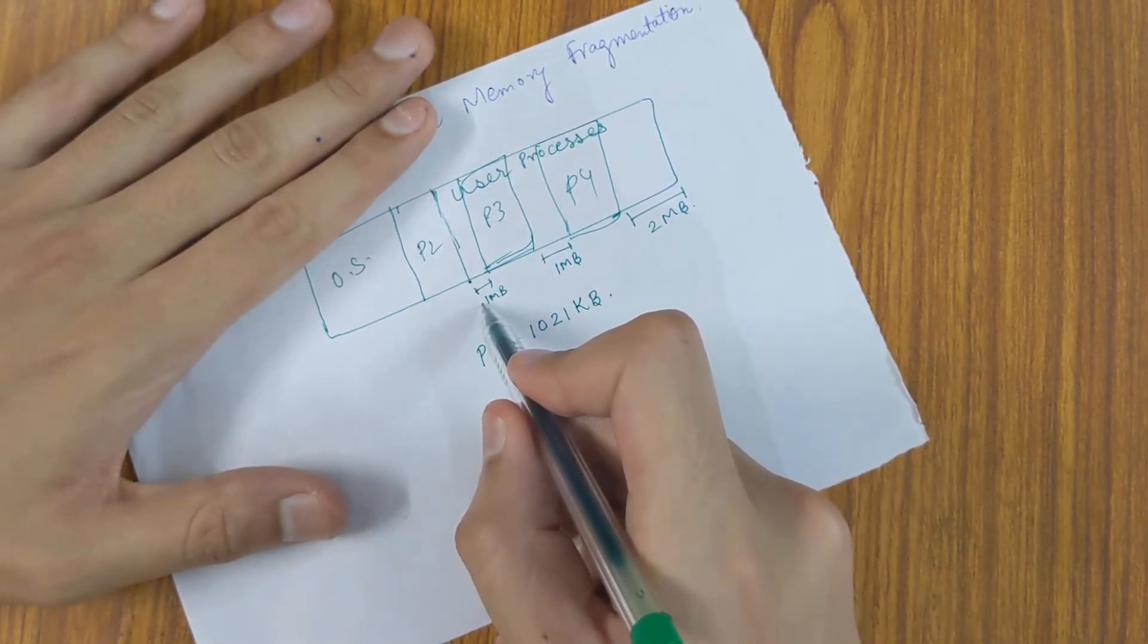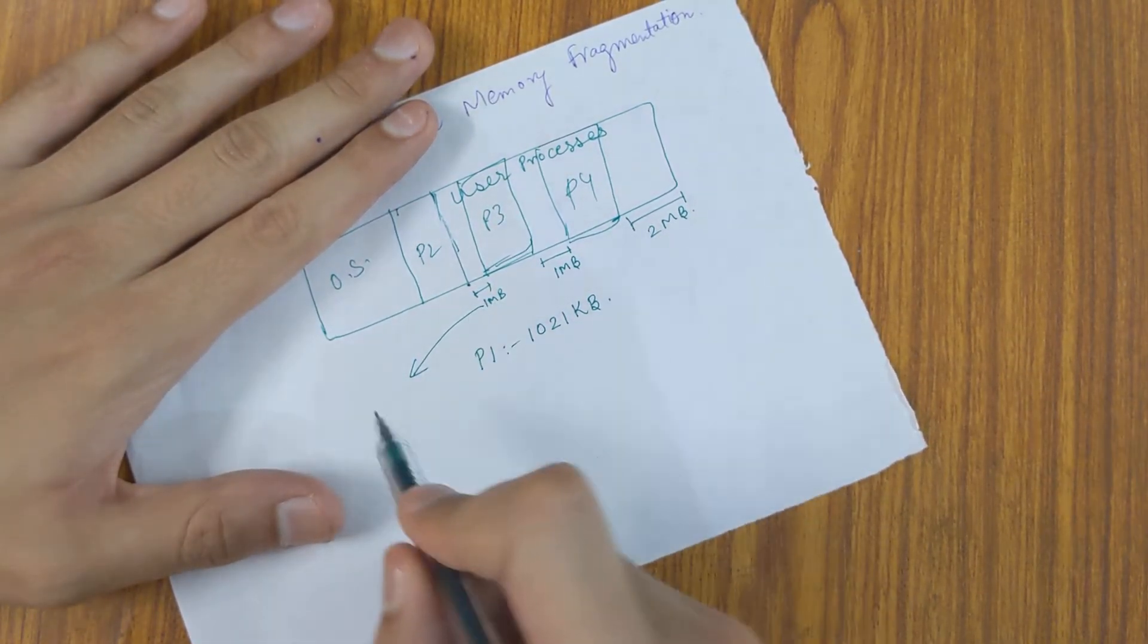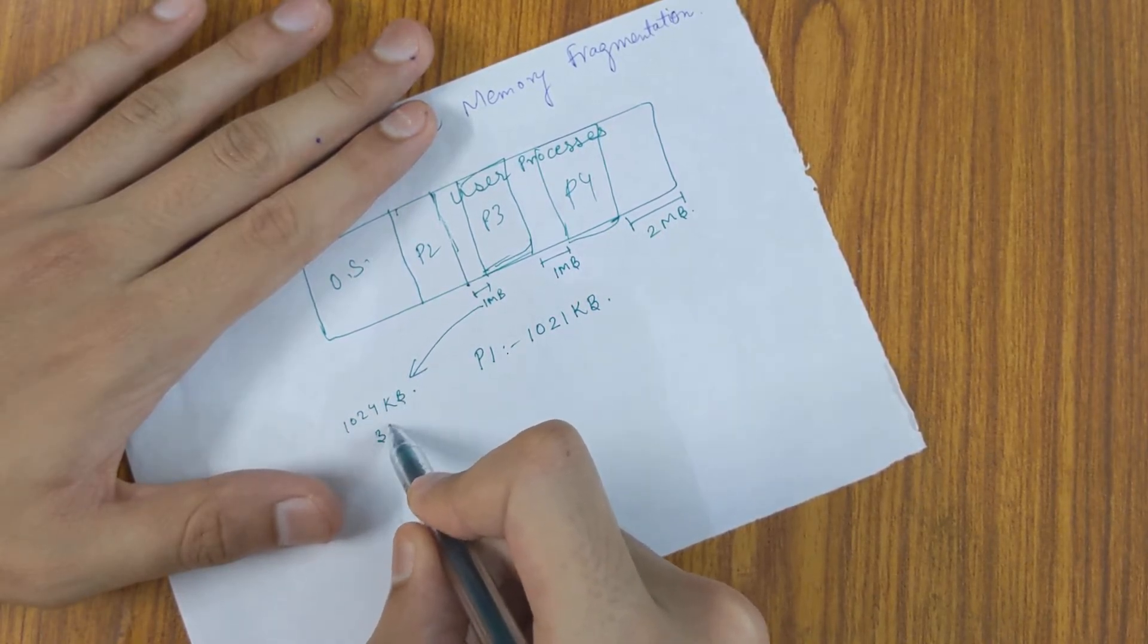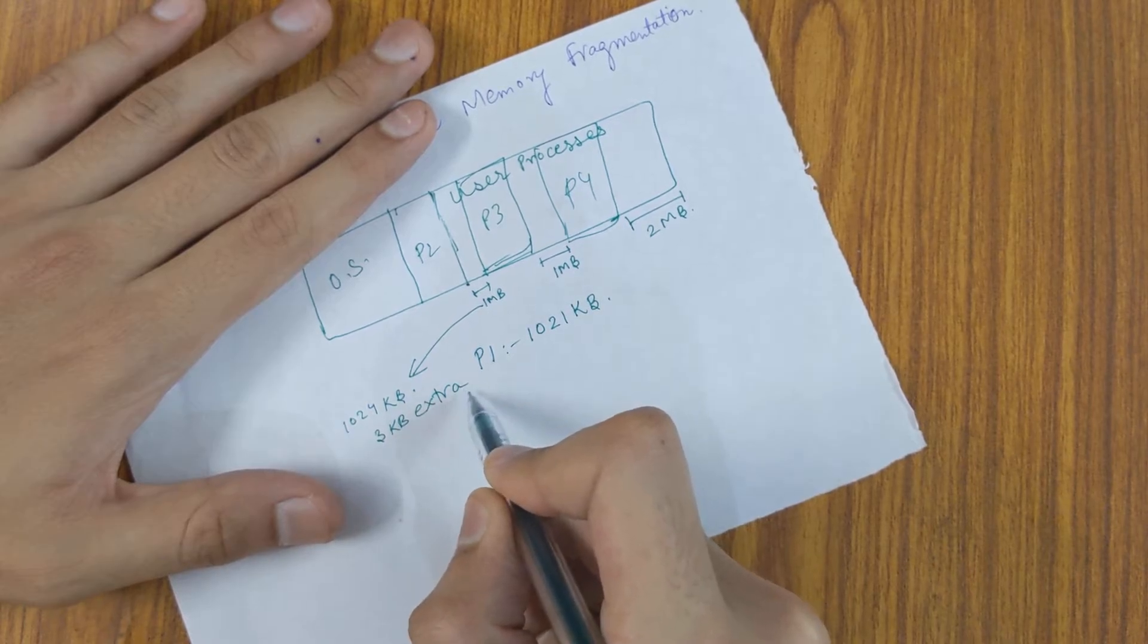But our hole size is 1 MB which is 1024 KB which is 3 KB extra.